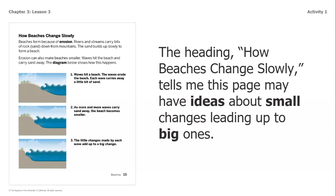On the next page, page 13, the heading says 'Beaches Change Slowly,' which gives me an idea that it's going to explain small changes leading up to a big change. Beaches form because of erosion. Rivers and streams carry bits of rock and sand down from mountains. The sand builds up slowly to form a beach. Erosion can also make beaches smaller — waves hit the beach and carry sand away. Each wave carries a little bit of sand, and as more and more waves carry sand away, the beach becomes smaller. The little changes made by each wave add up to a big change.